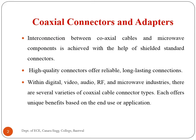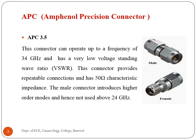The average circumference of the coaxial cable for high frequency operation must be limited to about one wavelength. Several types of coaxial connectors have been developed, some of which are described below. The APC 3.5 connector can operate up to a frequency of 34 gigahertz and has a very low voltage standing wave ratio. This connector provides repeatable connections and has 50 ohm characteristic impedance.